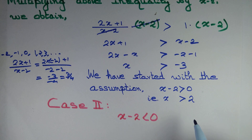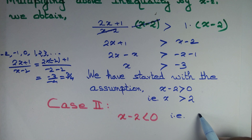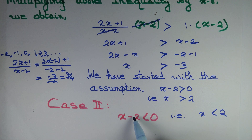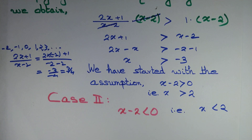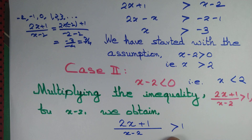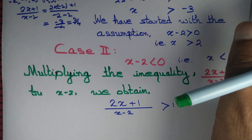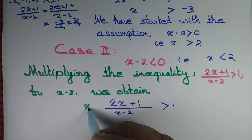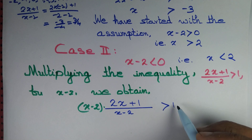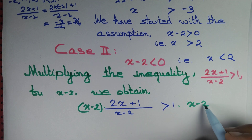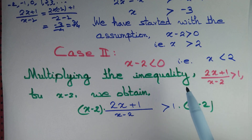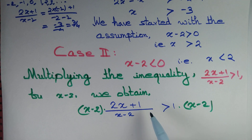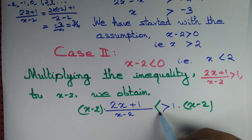Now consider Case 2: x minus 2 is less than 0, that is x is less than 2. We multiply the given inequality by x minus 2. Since x minus 2 is now a negative number, when we multiply by a negative number the inequality must reverse — that is the mistake we had made earlier.